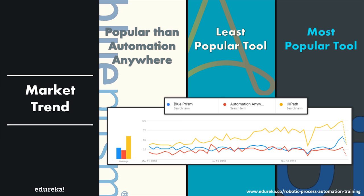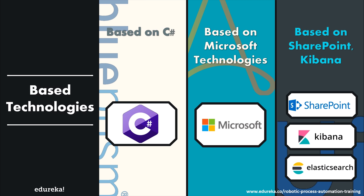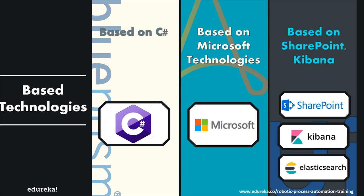Moving on to the next parameter — based technologies. Blue Prism is based on C#, Automation Anywhere is based on Microsoft technologies, and UI Path is based on numerous technologies like SharePoint, Kibana, and Elasticsearch. While all three tools are built on different technologies, they aim to cater to enterprise needs with similar functionalities.